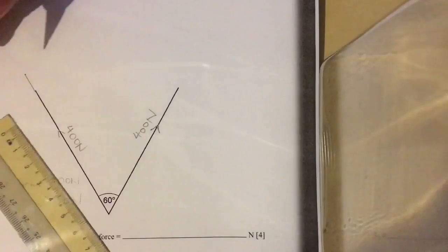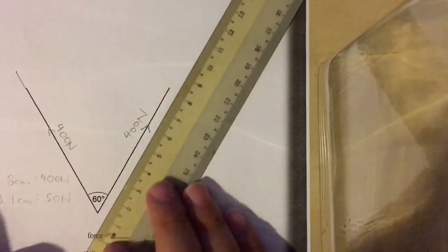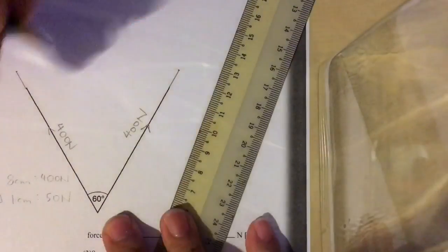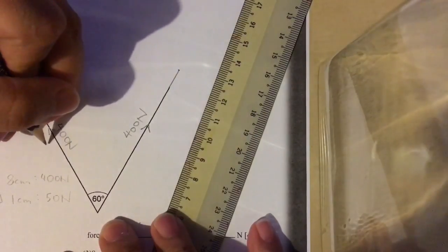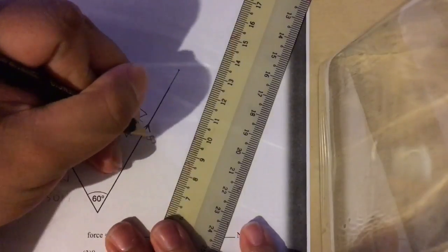It ends here. This one is also 400 N. Therefore, I will also draw a line that is 8 cm long. I personally like to label these lines as well, the length that I have drawn them. Here I will write down 8 cm and here I will write down 8 cm.